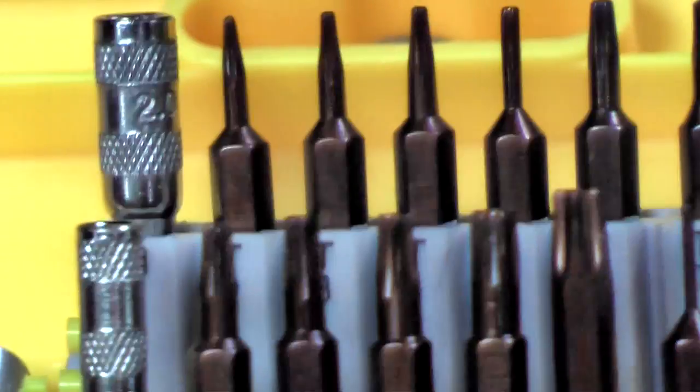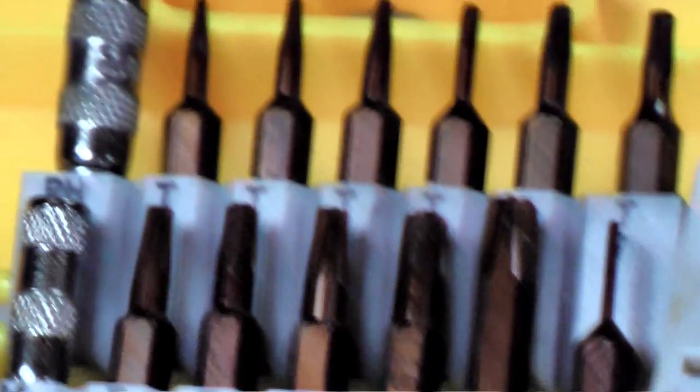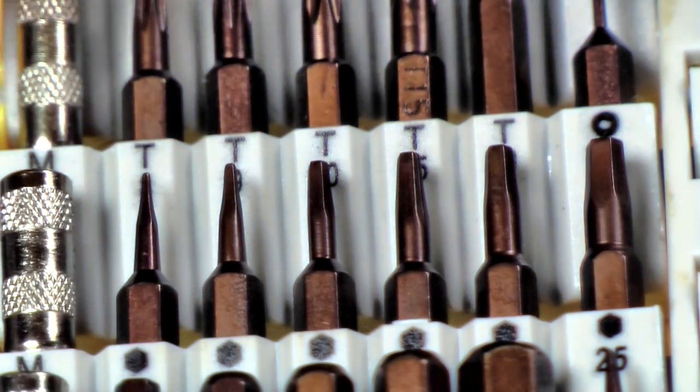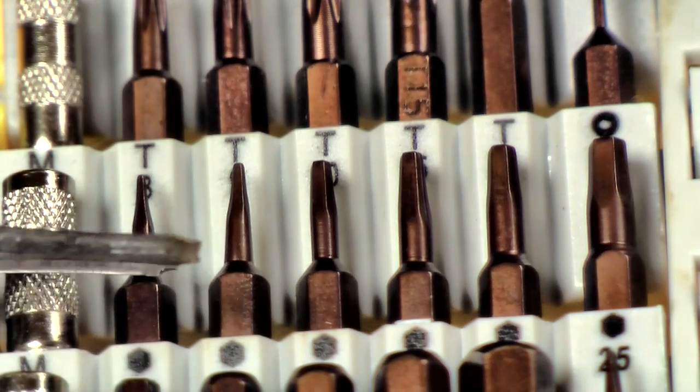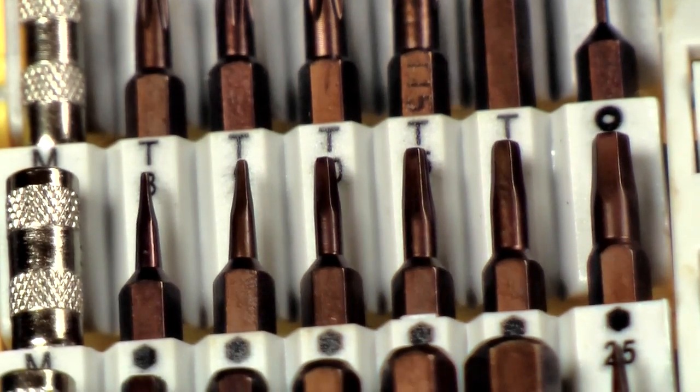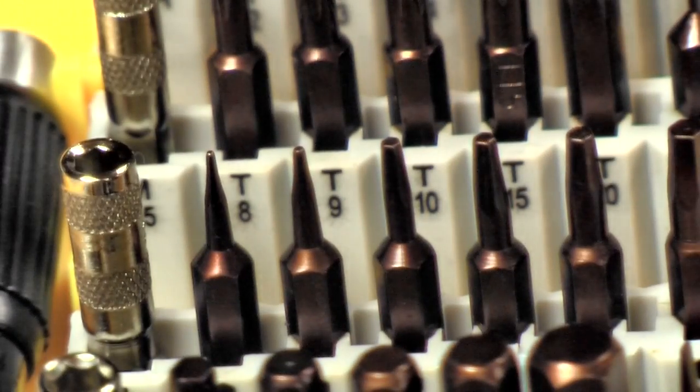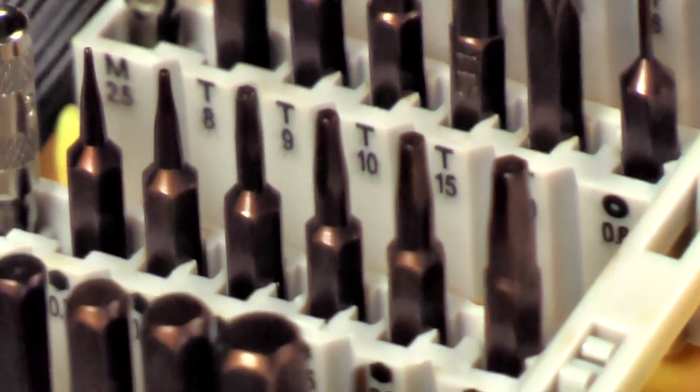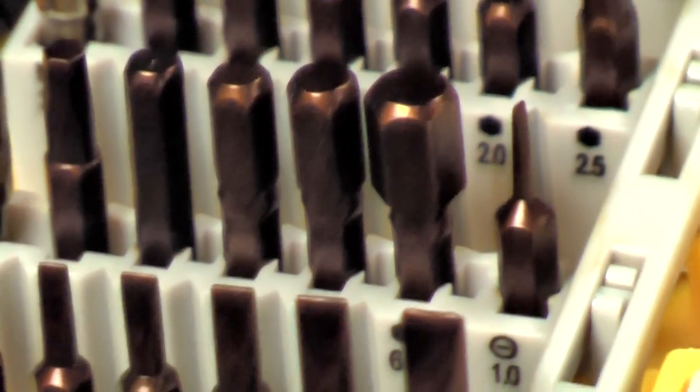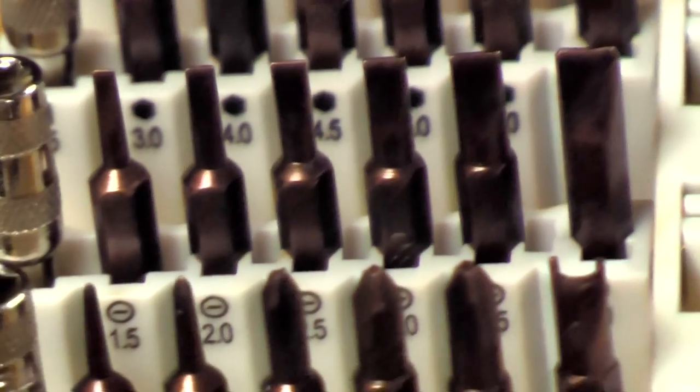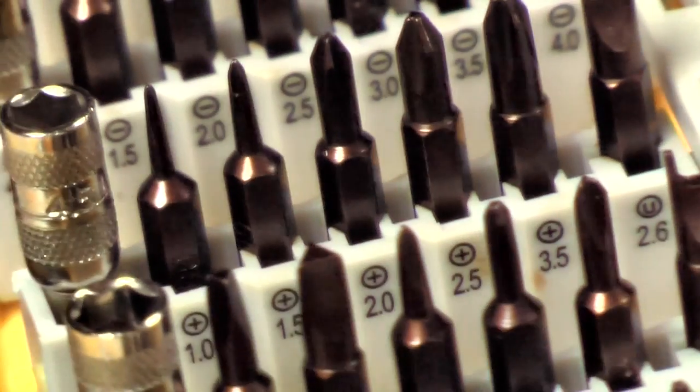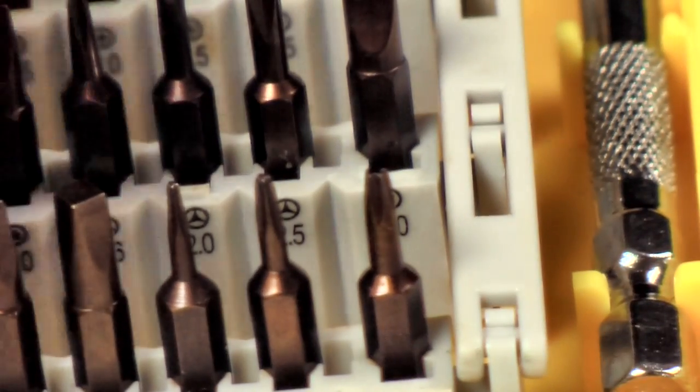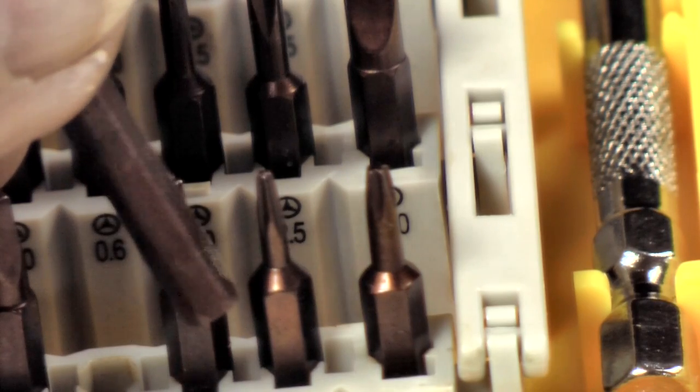I'll give you a really close-up look at the bit selection in here. Again, these things are extremely tiny. This will give you an idea what comes in the kit. This is an extreme macro view. Each bit is stamped with its size on there.